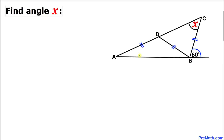Welcome to pre-math. In this video tutorial we have triangle ABC such that side length AD, side length BD, and side length BC are equal. Moreover, angle B is 60 degrees, and we are going to find the value of angle X.